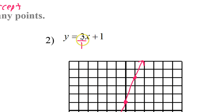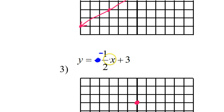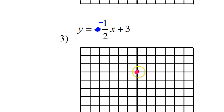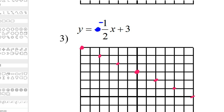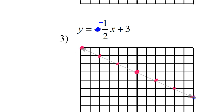With a negative sign in the numerator, instead of going up 1 I go down 1, but still go right 2. I always go to the right — up and right if positive, down and right if negative. So here it's down 1, right 2, repeated for more points. Going left, it's up 1, left 2.